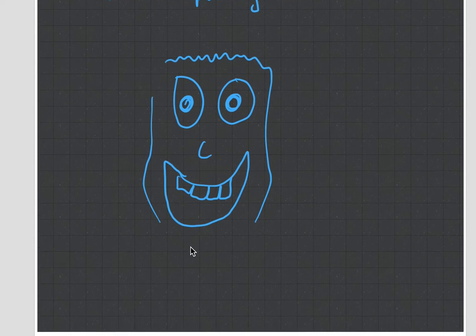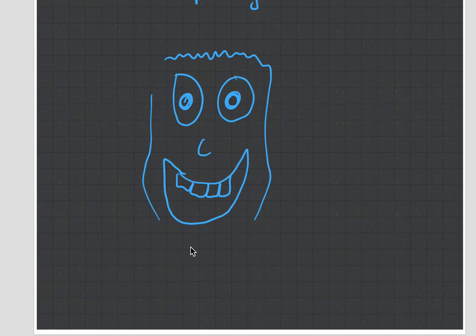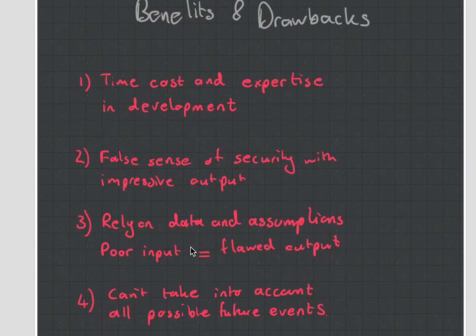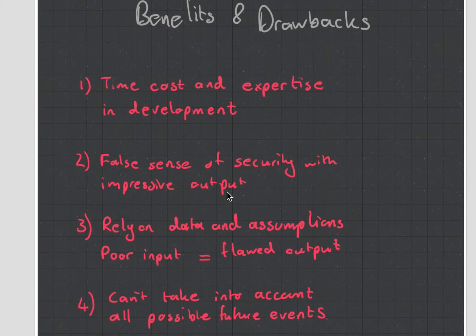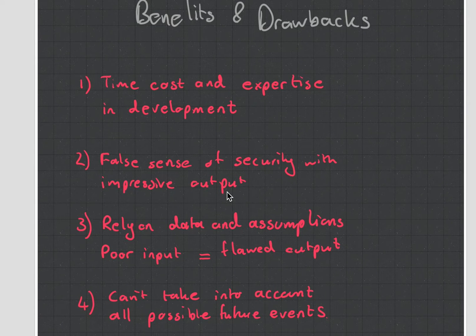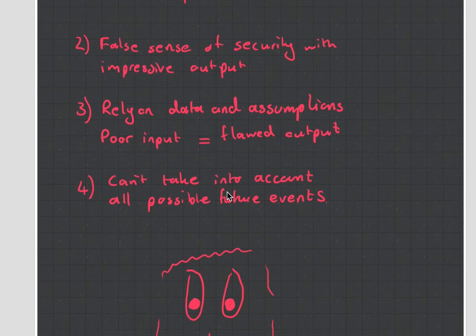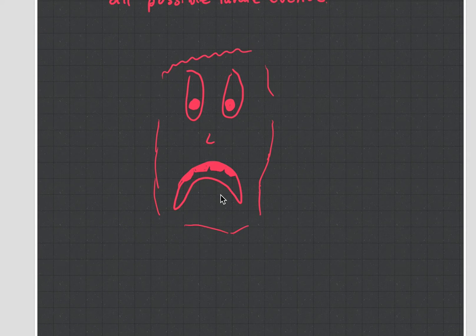But there are also drawbacks to models. They're not perfect, amazing things. They take a lot of time and money to develop. You need to be very smart to create them. They can give you a false sense of security because the output looks impressive. They rely on data and assumptions which could be wrong - garbage in, garbage out. And you can't take into account every single possible future. Models are not perfect, so just beware of that.